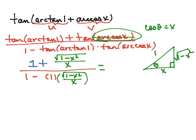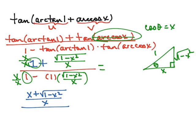Now to simplify, let's get a common denominator. We rewrite the 1 in the numerator as x over x, and the 1 in the denominator as x over x. So in our numerator we have x plus the square root of 1 minus x squared, all divided by x. And in our denominator we have x minus the square root of 1 minus x squared, all divided by x.